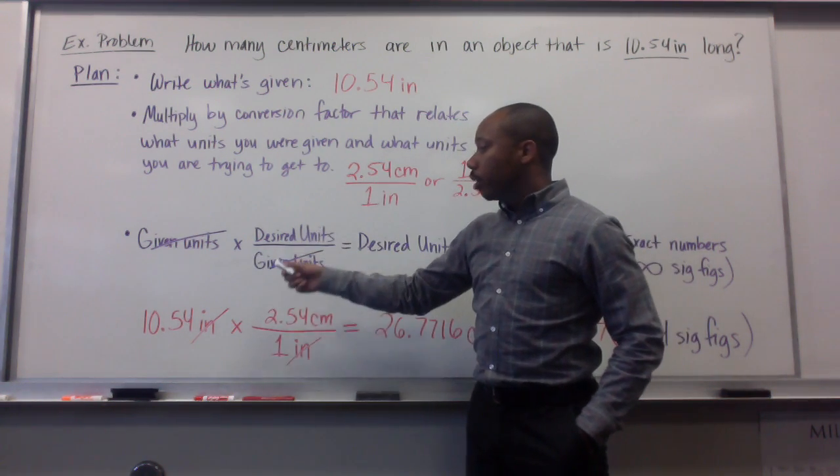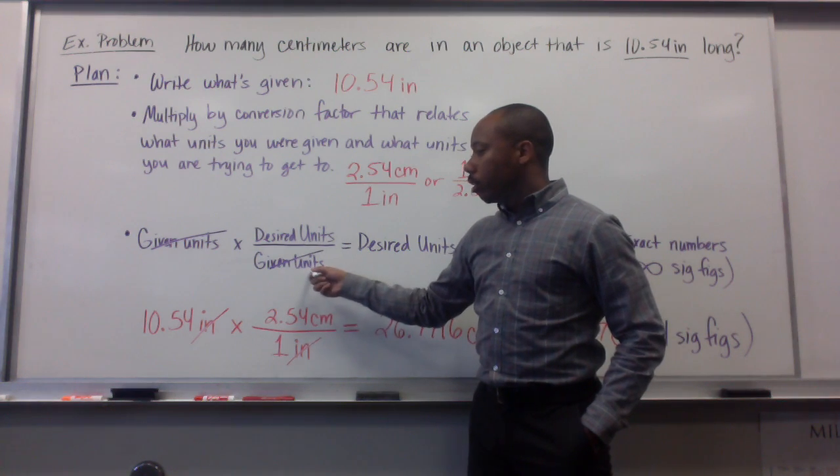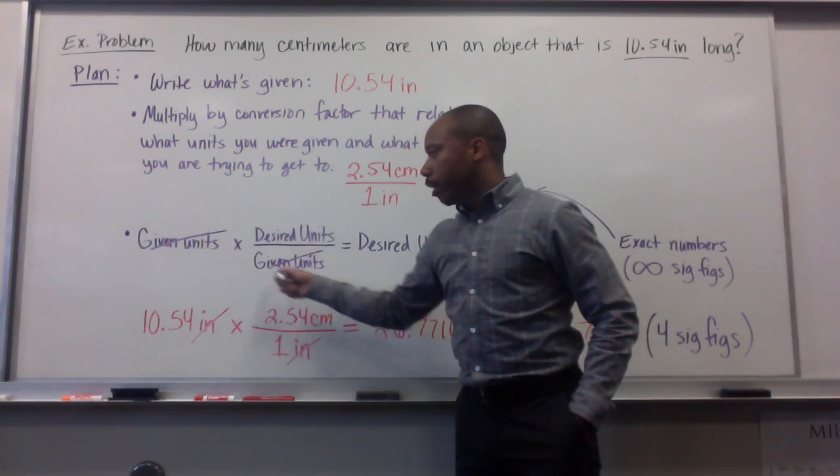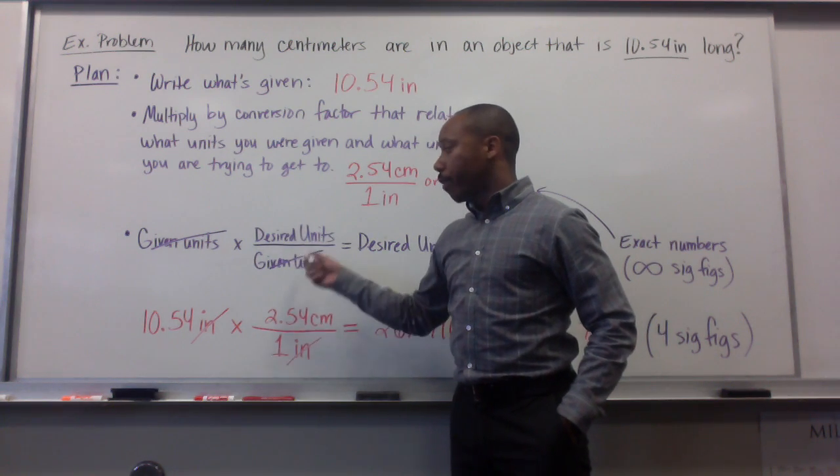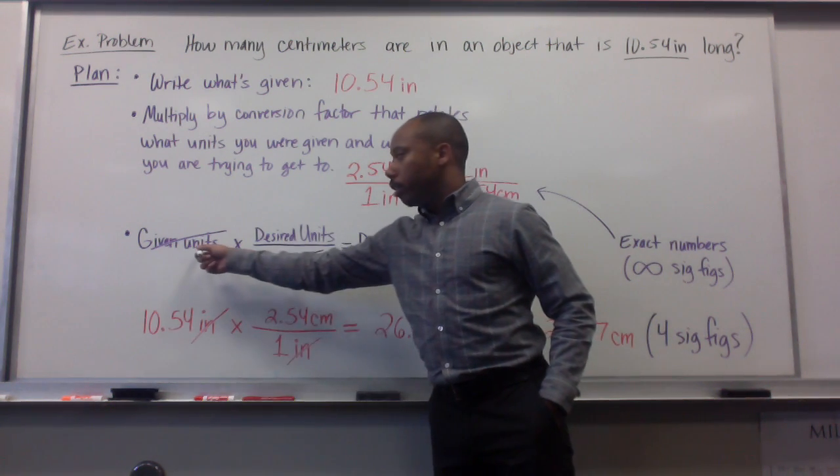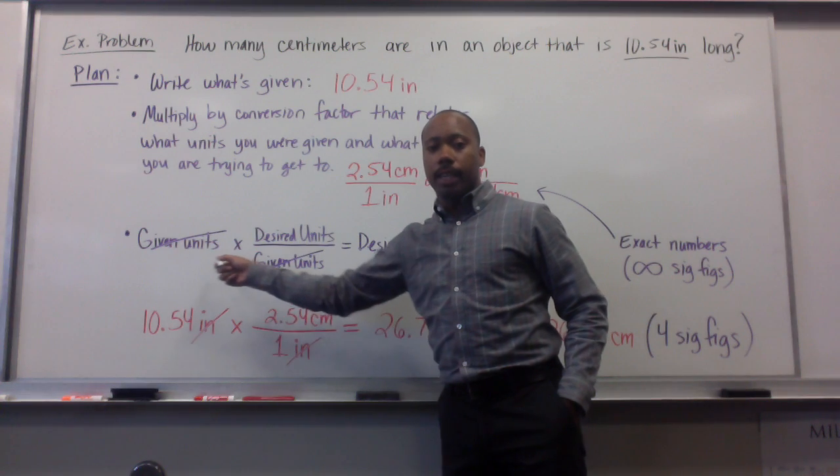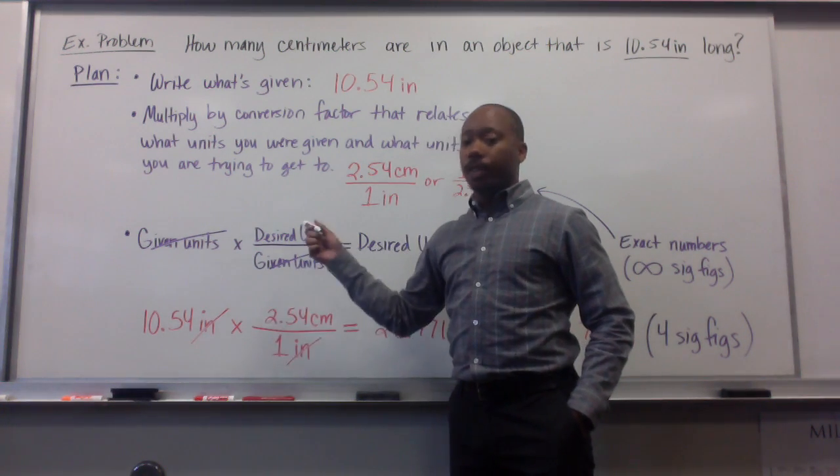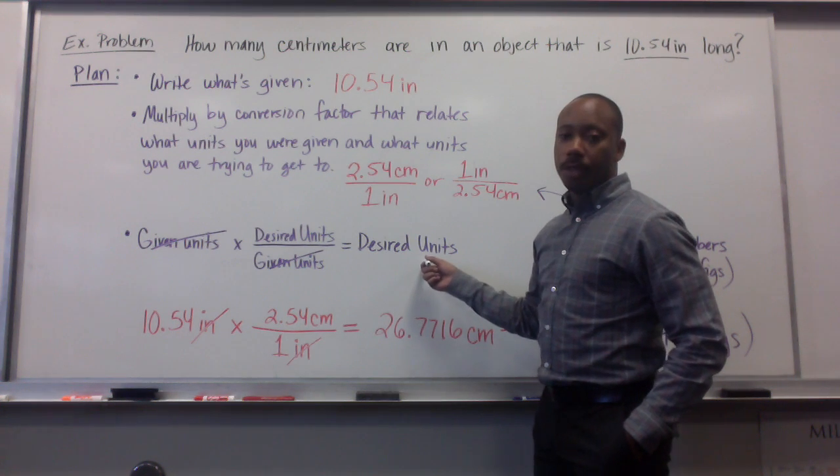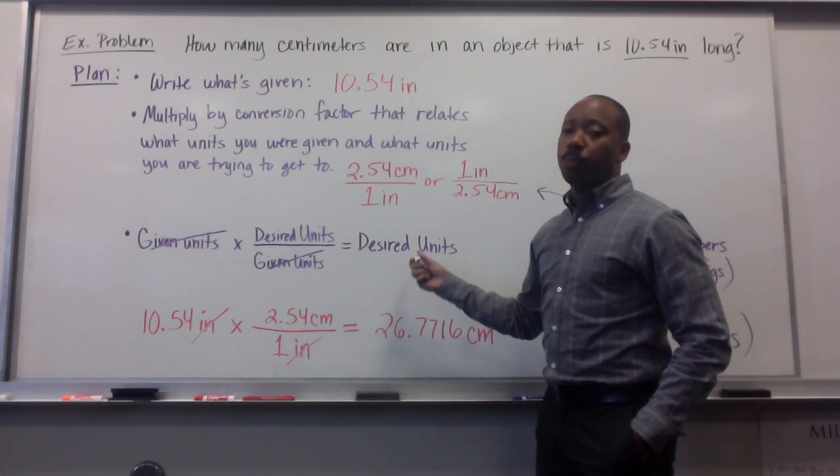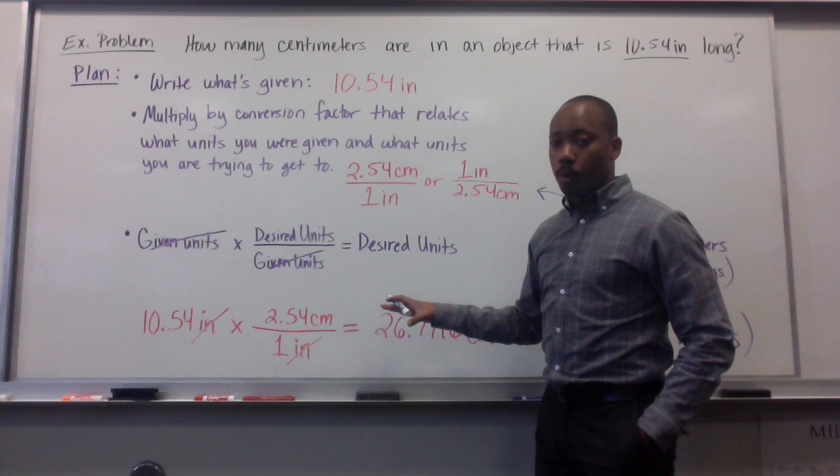The third step is to take what you're given and the appropriate units. Multiply it times the conversion factor, and organize it so that the given units are the same and across from each other. The given units from your conversion factor in the denominator are cross-canceling, and the desired units are in the numerator, giving you the resultant desired units. If you didn't understand that, let's put some numbers to it to make it more relevant.